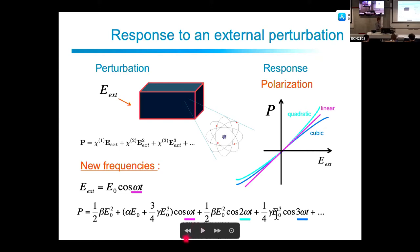For the second order, calculating the square of the cosine gives one static term at zero frequency and another term at twice the frequency. For the third order, we can have a response at omega and at three omega, and so on.